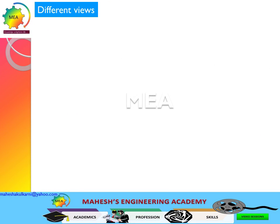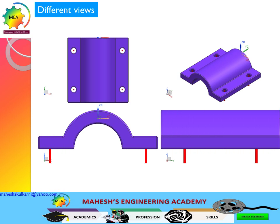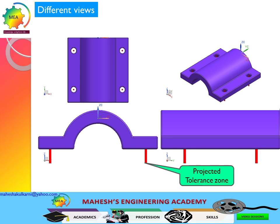Let us look at different views to understand the projected tolerance very clearly. The circular tolerance zone is projected from the surface equal to the value of projected tolerance specified in the feature control frame — in this case, 0.5 units. That value can be equal to the thickness of the mating part, or equal to the height of a projected dowel pin or stud that is going to engage with any other mating part.